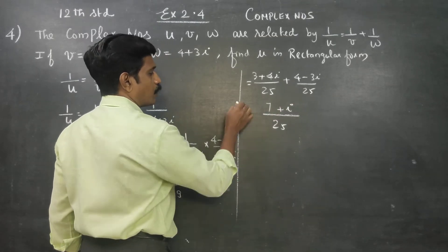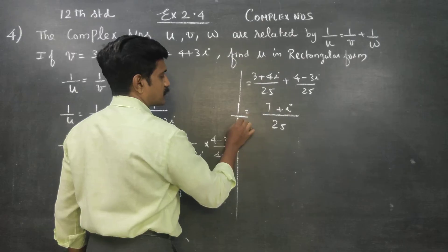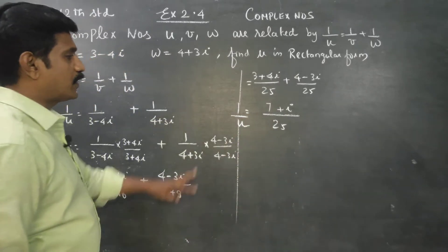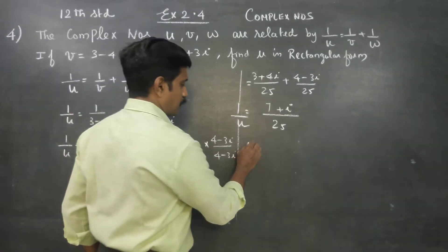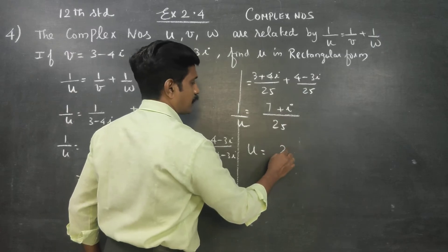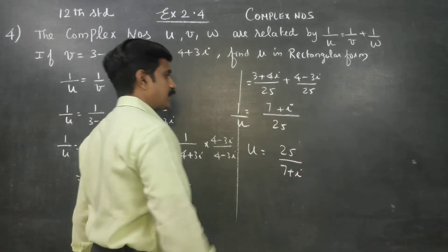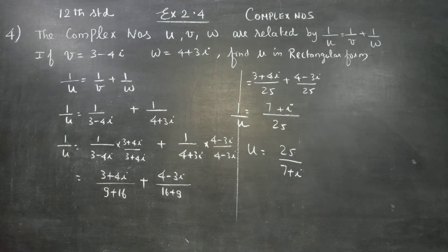1/u is over, this is my 1/u. I want actually u. Now I will take reciprocal: u is equal to 25 by 7 plus i. But this is not in rectangular form.